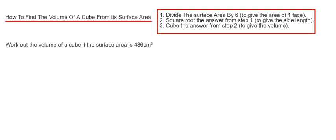So let's have a look at the example here. We've got to work out the volume of a cube if the surface area of our cube is 486 cm². So step one then is we divide 486 by 6 to give us the area of one face. So that's 81 cm².